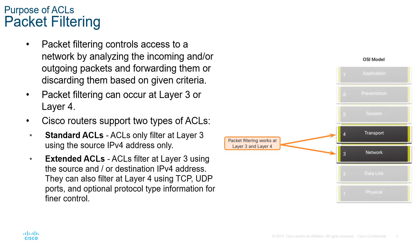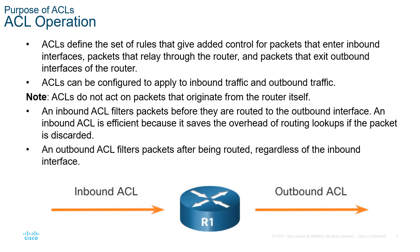Packet filtering works between layer 3 and layer 4. A standard ACL filters at layer 3 and only looks at source IP addresses. An extended ACL filters at layer 3 using source and/or destination address, and can also filter based on TCP or UDP ports, so extended ACLs operate between both layer 3 and layer 4. ACLs have to be applied to an interface — typically one ACL per interface either inbound or outbound. ACLs do not act on packets that originate from the router itself, only what is coming into or out of the device.